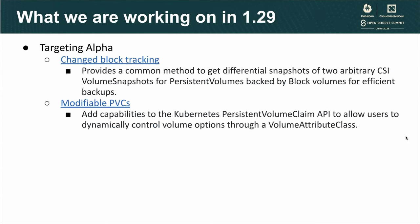In addition to these beta features, there are a few new features we're targeting for alpha in 1.29. First is changed block tracking. This feature provides a common API to get the incremental blocks that have changed between two volume snapshots. This feature is intended for block-based storage and is going to be used by backup software to be able to take efficient backups. If you're interested in this feature, please join the data protection working group to learn more and get involved.